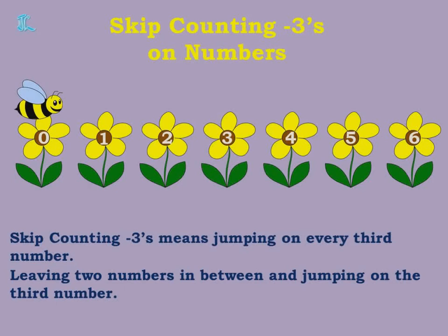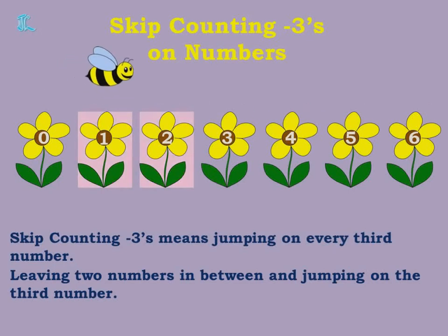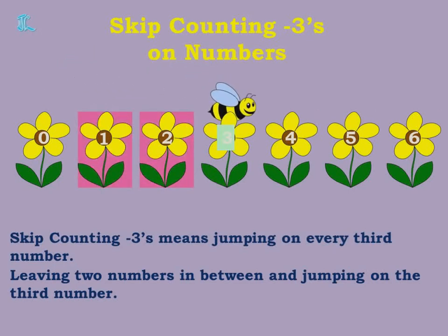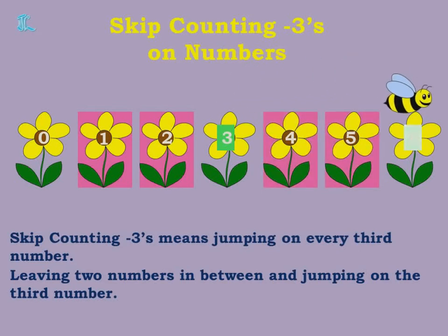The bee is on number 0. For Skip Counting by threes, it should leave the two numbers 1 and 2 and jump on to the third number, 3. Then similarly it will leave 4 and 5 and jump on to number 6. So Skip Counting by threes means leaving two numbers in between and jumping on every third number.